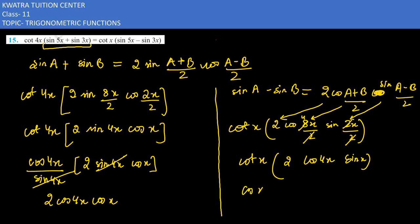We can write it as cos x over sin x in multiplication. I have 2 cos 4x, sin x, and sin x would be cancelling out. And you can see that the left hand side is equivalent to the right hand side, so for this one we have to make sure that left hand side is coming equal to the right hand side.